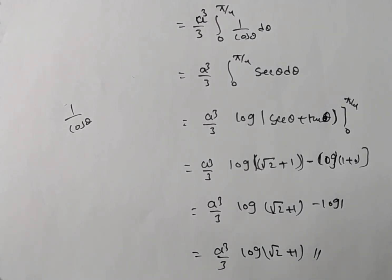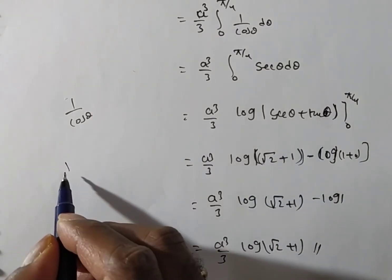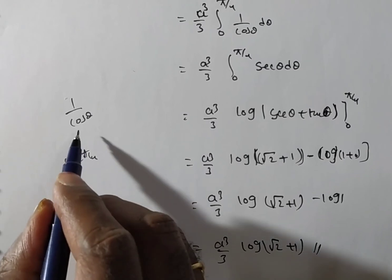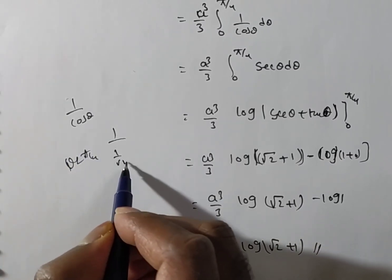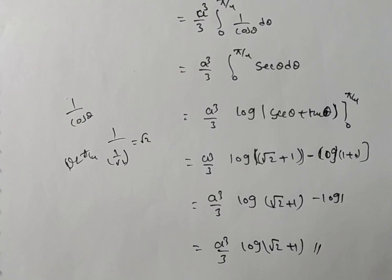Is it clear for everyone? At θ = π/4, cos(π/4) = 1/√2, so 1/(1/√2) = √2, which is what we wrote. If you have any doubts or want more problems, please give your valuable feedback in the comment box. Thank you for watching this video. Don't forget to share with others.